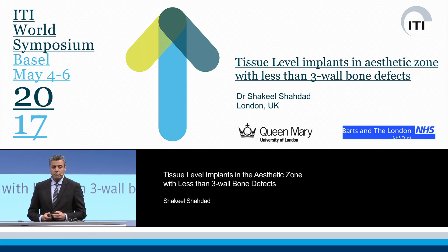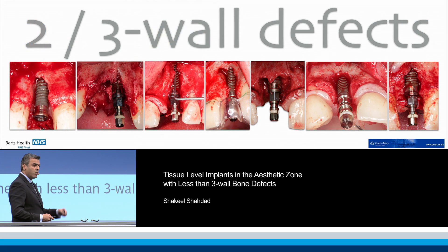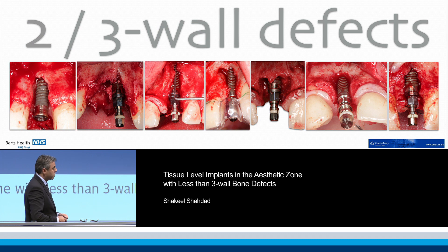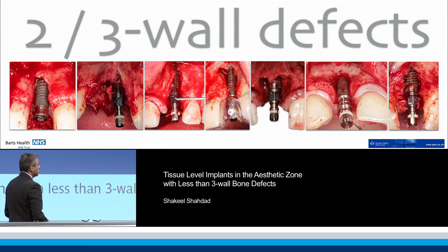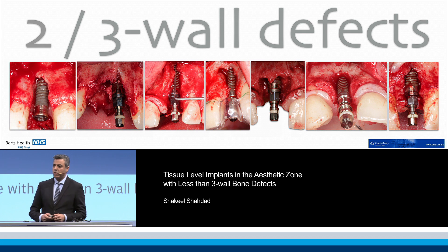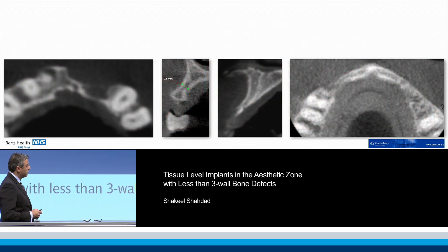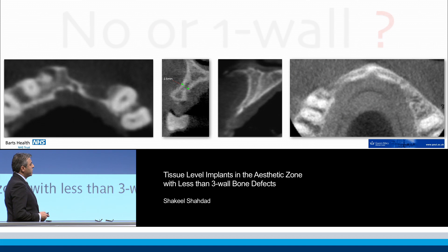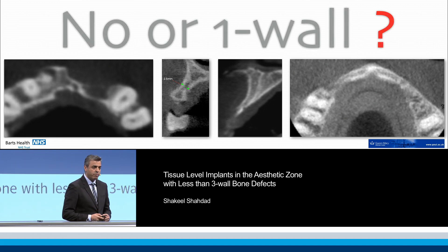The question is whether we can place these implants in less than three-wall bone defects. We know from evidence, and from the presentation by Professor Boozer yesterday, that two- and three-wall bone defects are the ones which are not a problem for us — they are predictable in terms of regenerating bone effectively with simultaneous implant placement. The question for me to address this morning is whether we can approach cases where we have fewer bony walls.